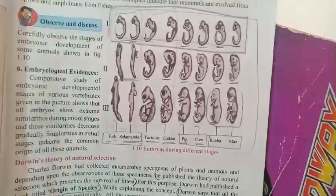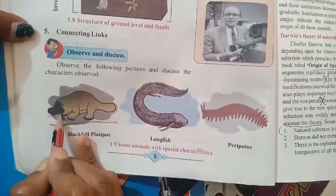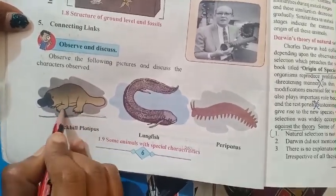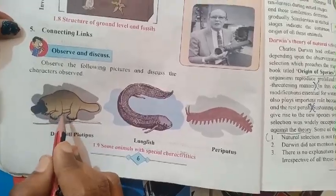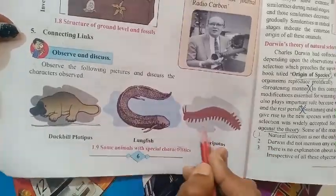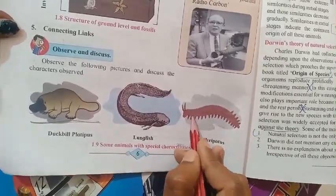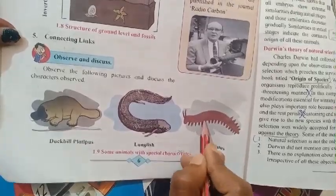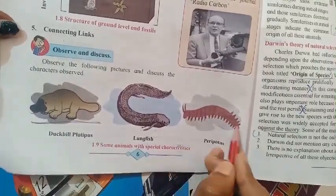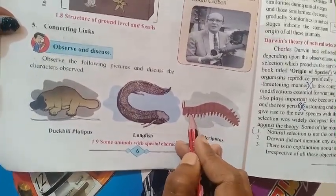Now let me show you the previous evidence: connecting links. Duckbill platypus has a mouth like a duck, the body like a reptile, but it has mammary glands to feed milk to its young. Lungfish is a fish but has lungs. Peripatus has parapodia — leg-like outgrowths — and a segmented body, looking like an earthworm but with characters of cockroaches too.